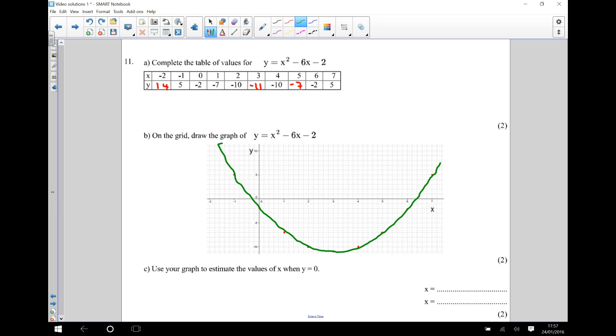Okay, so part c use your graph to estimate the values of x when y is equal to zero. So what we're saying is when the y coordinate is equal to zero what's the x coordinate going to be. So my y coordinate going to be zero is going to be any point along this line here which is there and there.